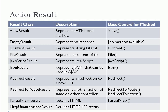PartialViewResult is also a useful concept in MVC. Your view can be either an entire view or a partial view. PartialViewResult is mostly used with Ajax, and while studying Ajax we will see how to use it — it also represents HTML, and the available method is PartialView(). The last one is HttpUnauthorizedResult, for which there is no helper method, so you have to create the object yourself. This is mainly used with authentication and authorization, and we will cover it when we study those topics.